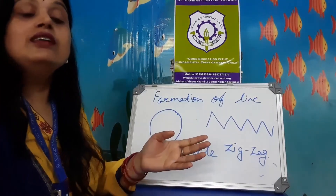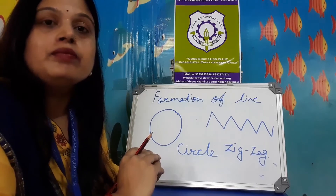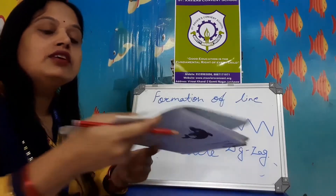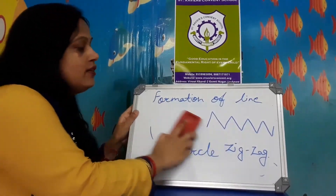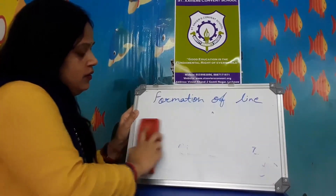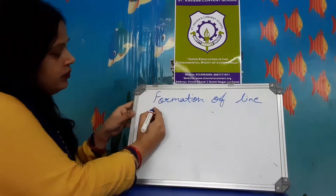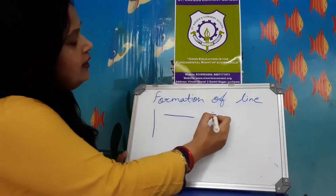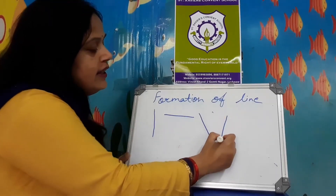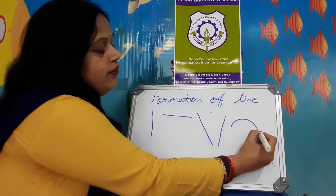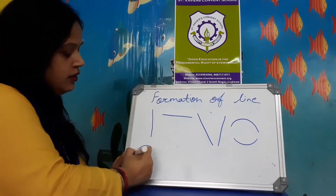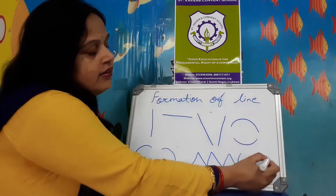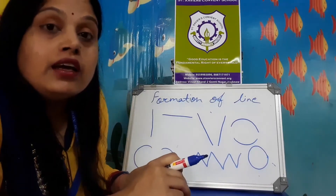Now, these are the lines — you have to draw and trace them in your book. So you have to trace them in your book. Now we will repeat all the lines: standing line, sleeping line, slanting line, curve — upper, left, right — zigzag, circle. These are the lines and you read them in your book.